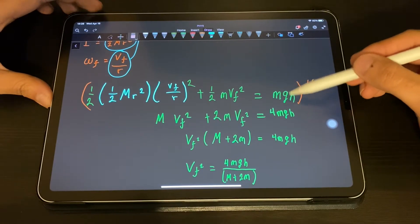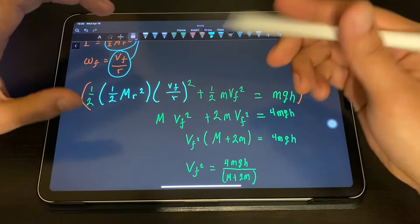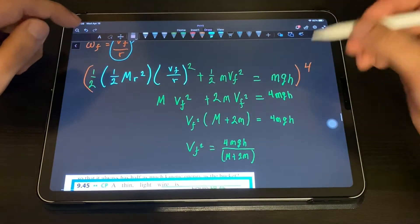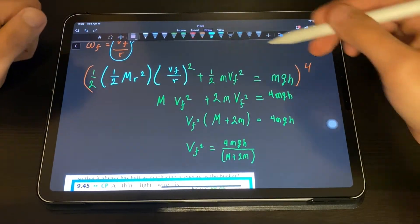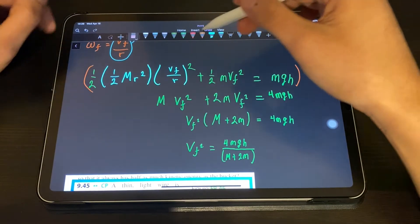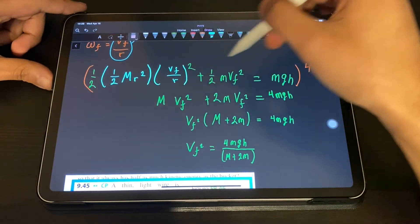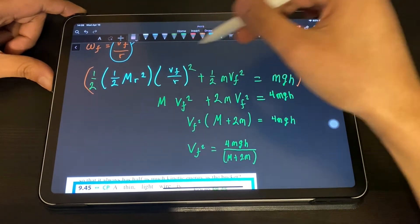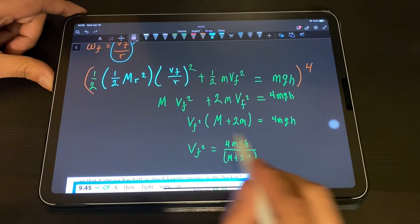I decided to bring the potential energy on this side just because I'm used to writing with less things on this side. Then we can do some algebra to simplify this and we get this formula.